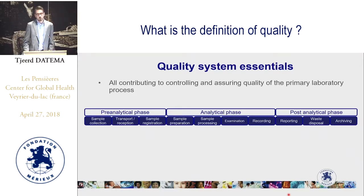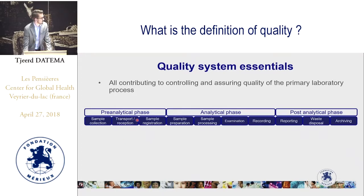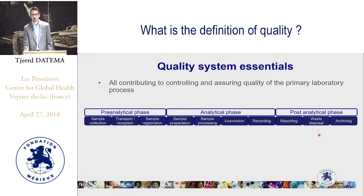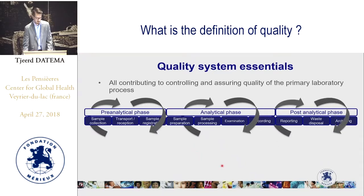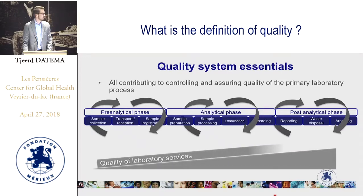All quality system essentials contribute to assuring quality of the primary laboratory process. The primary laboratory process consists of 10 steps: sample control, transport and reception, sample registration, sample preparation, sample processing, examination, recording, reporting, waste disposal, and archiving. This can be divided into the pre-analytical, analytical, and post-analytical phase. The quality system essentials really address all these different steps, working together to make sure that the quality of the primary laboratory process is continuously controlled and assured.